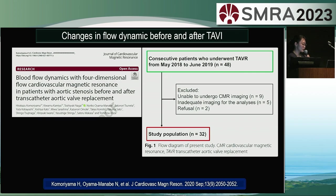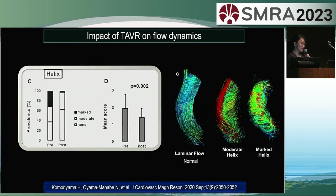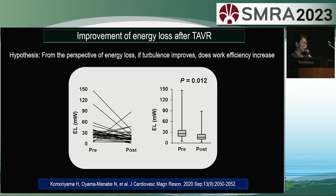4D flow MRI enables accurate analysis of blood flow dynamics such as flow velocity, flow pattern, wall shear stress, and energy loss. We sought to examine the changes in blood flow dynamics of patients with severe aortic valve stenosis who underwent TAVR. When comparing data before and after TAVR, we observed a significant reduction in helical flow after TAVR, while vortex flow did not show significant changes. From the perspective of energy loss, it is quantitatively evident that energy loss decreases after treatment, indicating improvement in energy efficiency due to correction of aortic valve stenosis, leading to increased work efficiency.